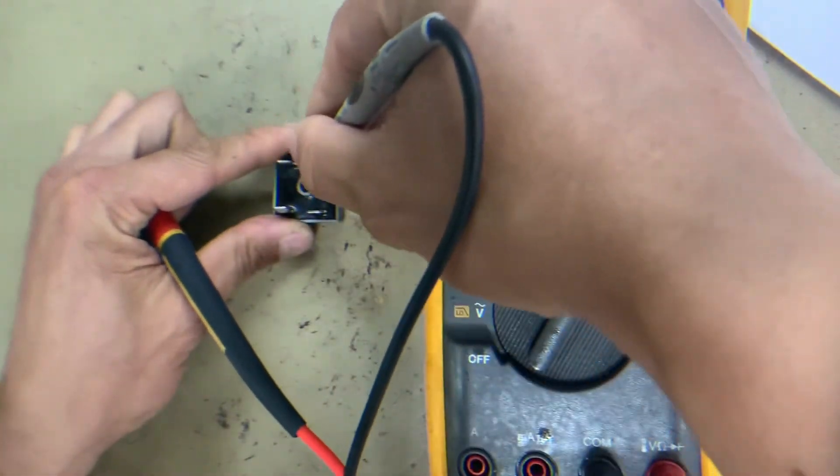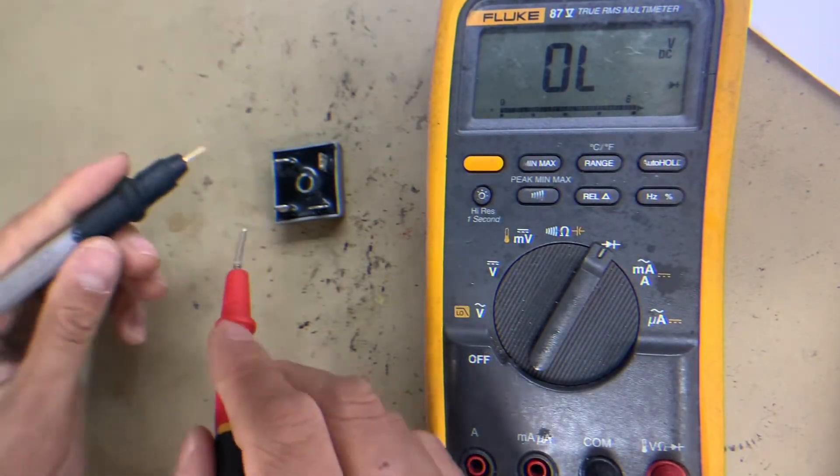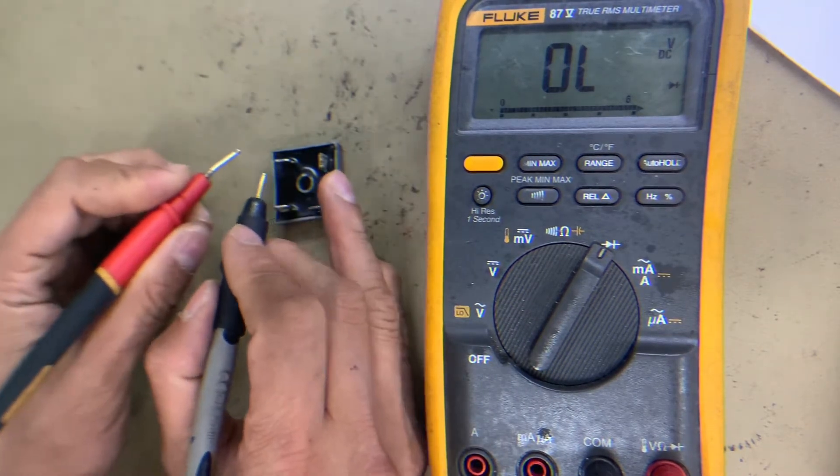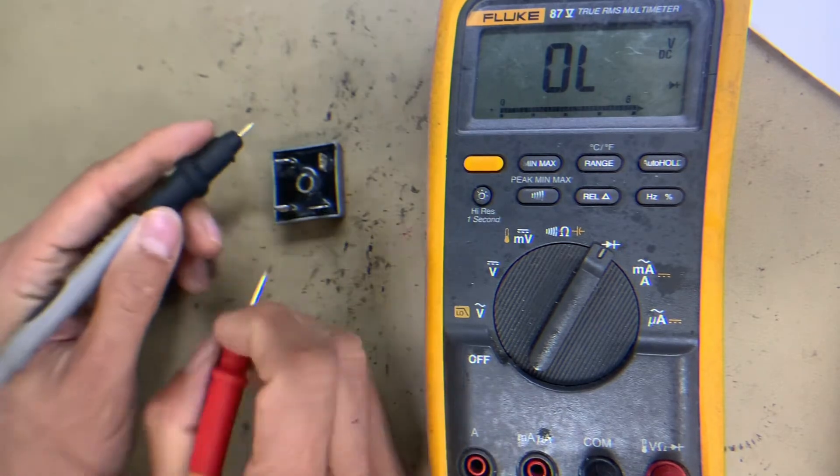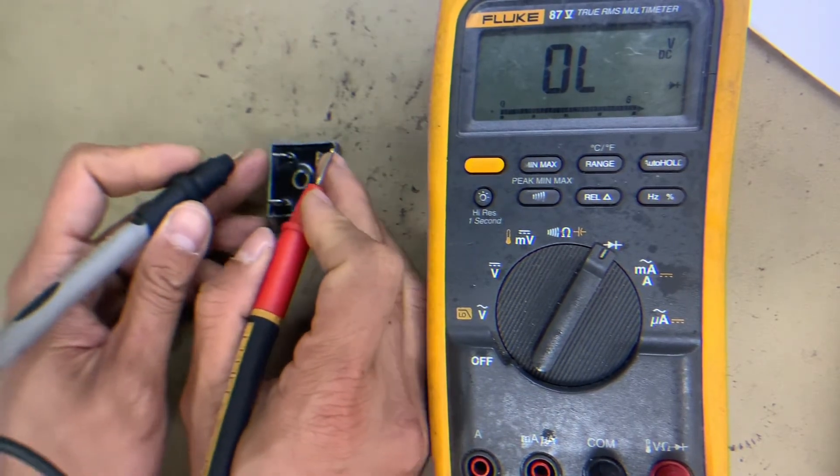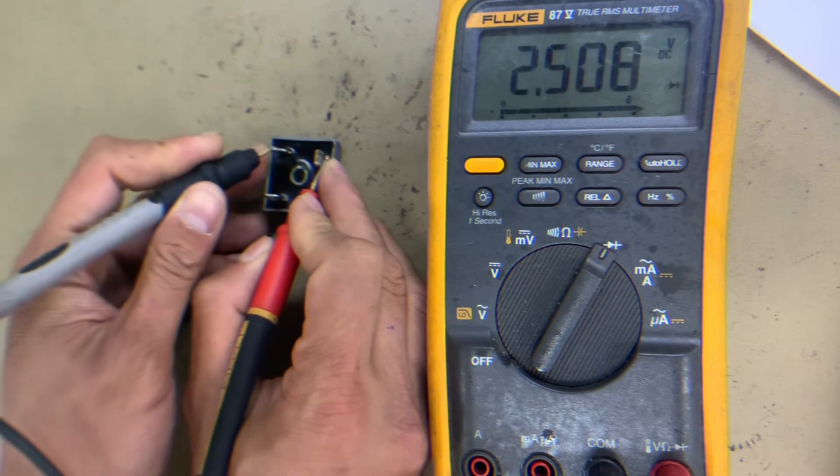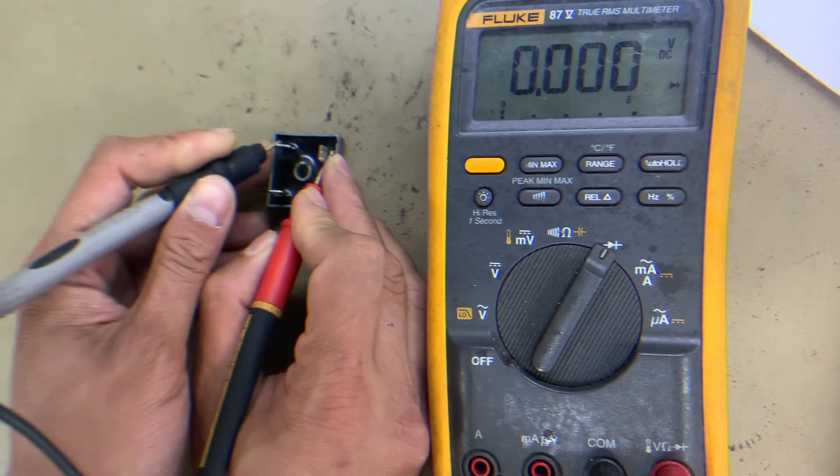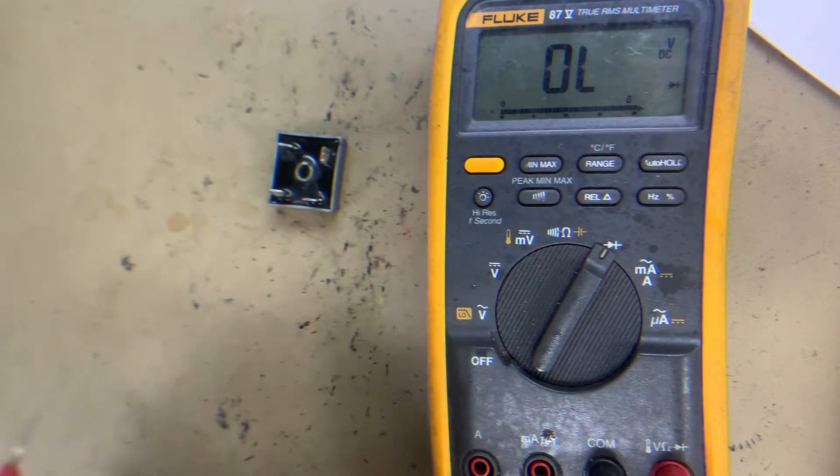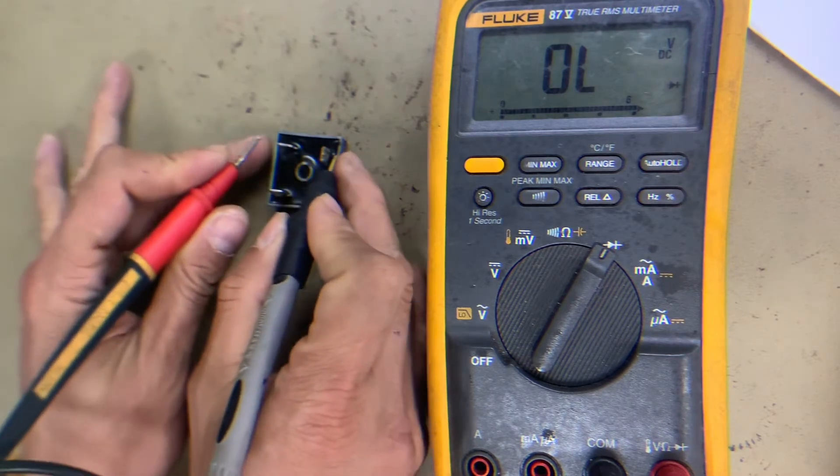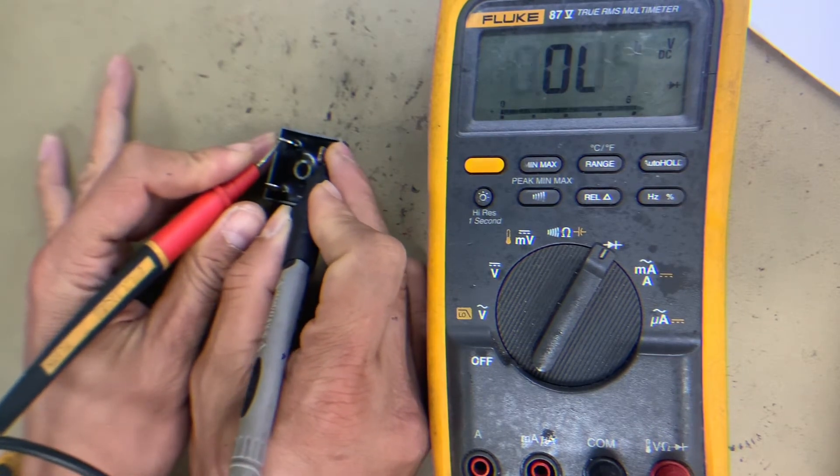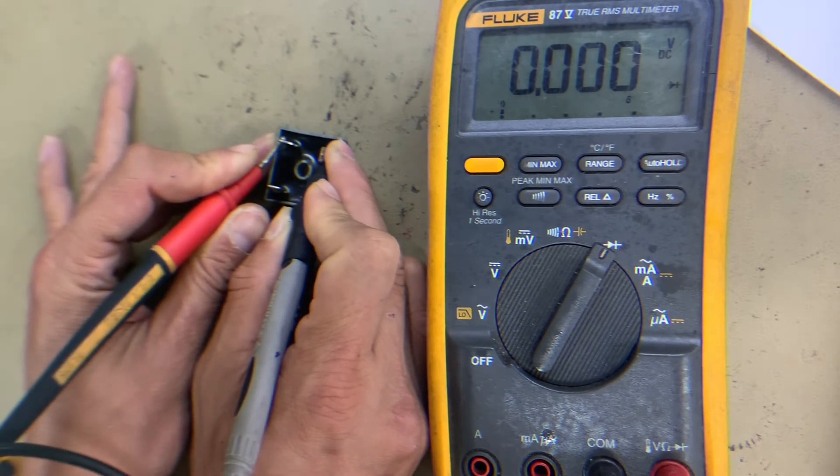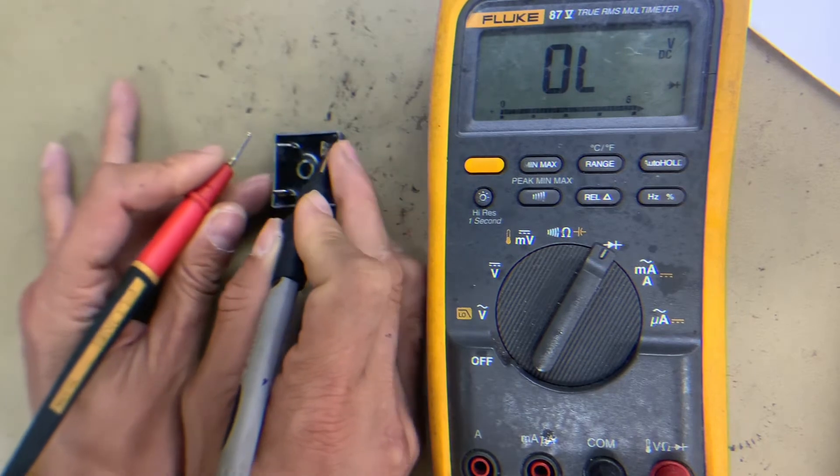Let's test now this second diode here. Anode here, the red probe. The reading is zero infinite zero. Inverse. The reading also is zero infinite, so the second diode is defective.